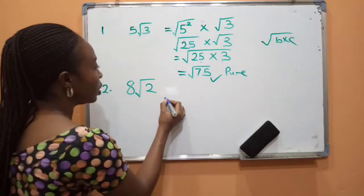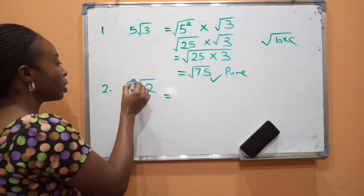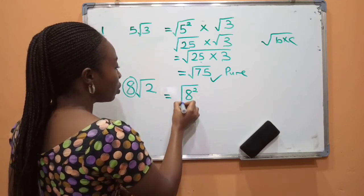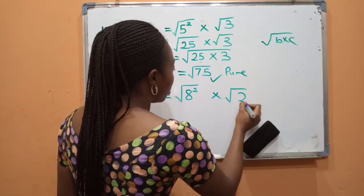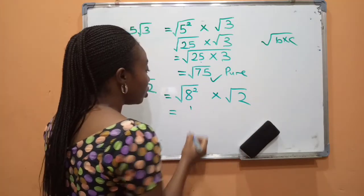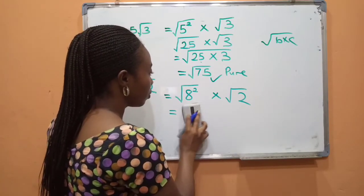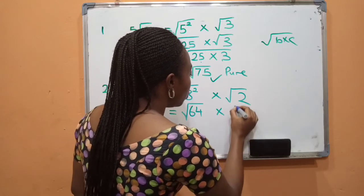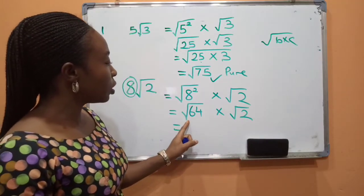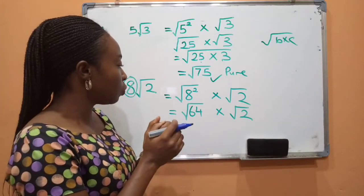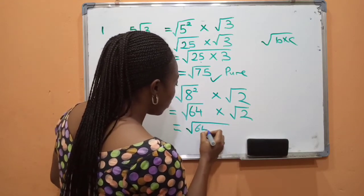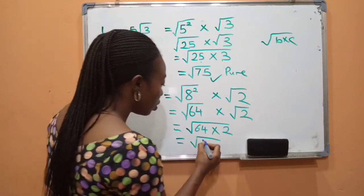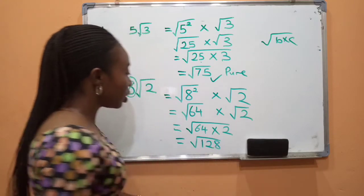How about this one? We are still going to do the same thing. Let's first of all start with this rational number. We are going to have the square of 8, then the root times root 2. What's the square of 8? The square of 8 is 64. So we have root 64 times root 2. According to the multiplication rule, we combine them. So we are going to have root 64 times 2. By the time we multiply 64 times 2, we are going to have root 128.